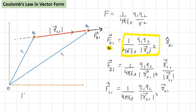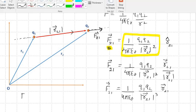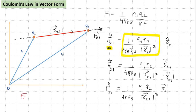Finally writing it: F21 vector equals 1 by 4 pi epsilon 0 q1 q2 upon r21 vector—written as r2 minus r1 vector whole cube—multiplied by r2 minus r1 vector. This is not in modulus. Done, this is F21 vector.